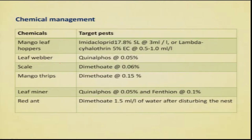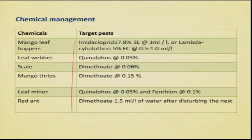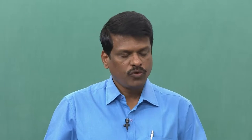Several chemicals can be used against these pests depending on the nature of feeding — whether they are defoliators or sucking pests. We can choose between contact and systemic insecticides accordingly.